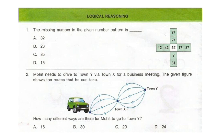Question 2: Mohit needs to drive to town Y via town X for a business meeting. The given figure shows the routes that he can take. How many different ways are there for Mohit to go to town Y? You can pause the video if you require more time to calculate. The correct answer is option C, 20.